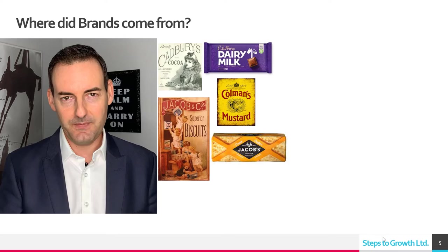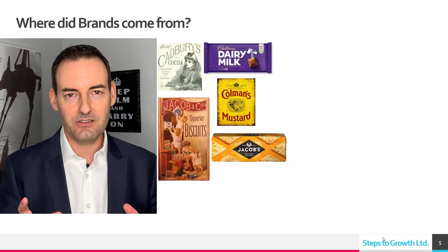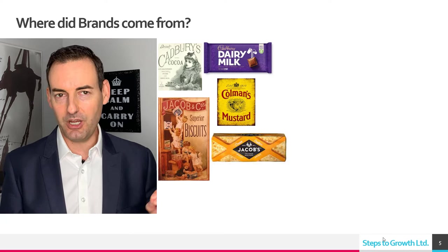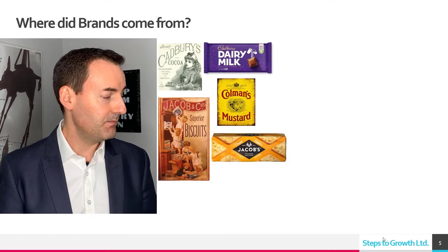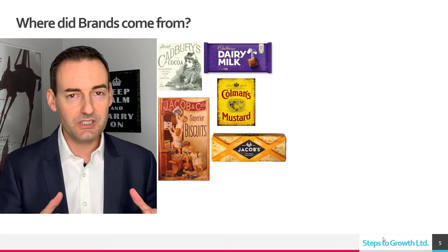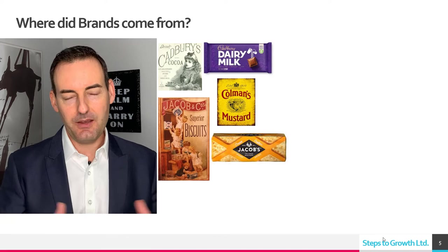If you look at Cadbury's chocolate, that came from Mr. Cadbury. Looking at an ad from the 1800s, it says 'finest ingredients, quality guaranteed' — guaranteeing this is real milk cocoa and not something bad. Similarly, you had Jacob's biscuits from the Jacob brothers, and Mr. Coleman made Coleman's mustard. So everybody was putting their names on things.